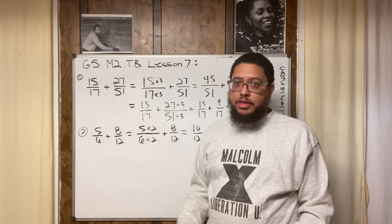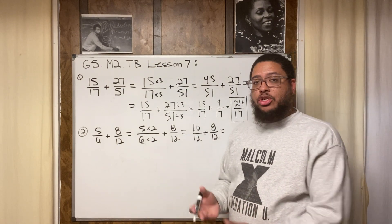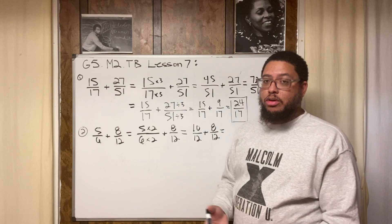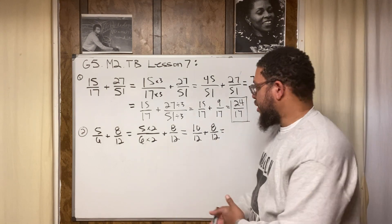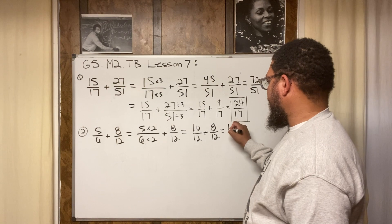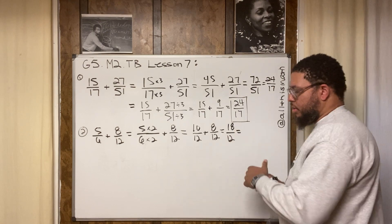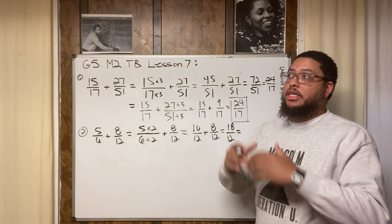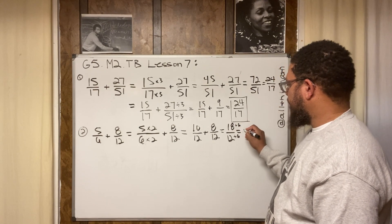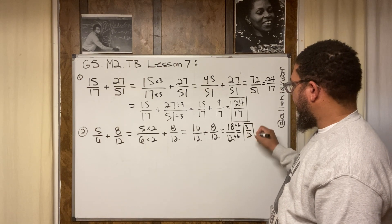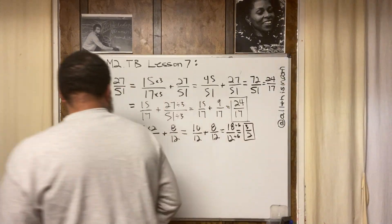You've got to practice daily — just like you practice your video games. So 10/12 plus 8/12 equals 18/12. Then I reduce: the greatest common factor of 18 and 12 is 6. 18 divided by 6 is 3, 12 divided by 6 is 2. So the answer is 3/2.